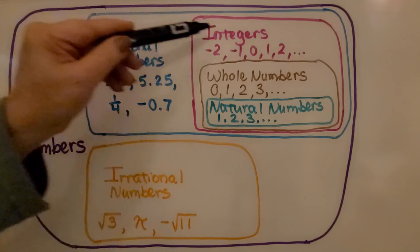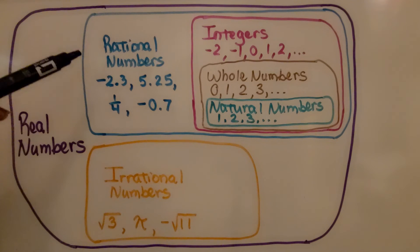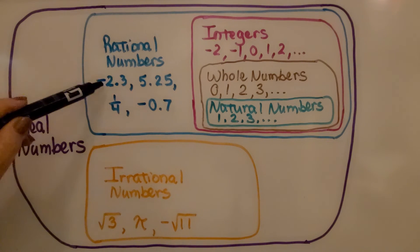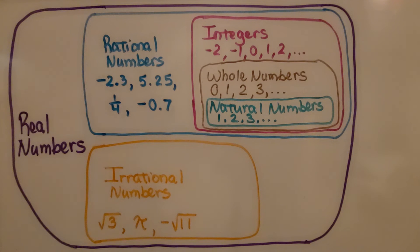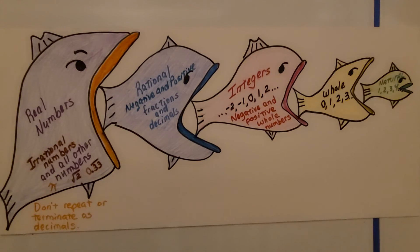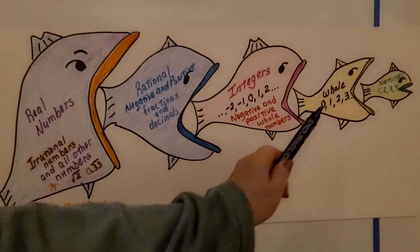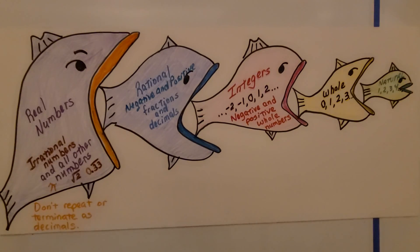For rational numbers, it includes all of these plus the negative and positive fractions and decimals. The irrational numbers cannot be written as a terminating decimal or a repeating decimal. And the rational numbers and irrational numbers are real numbers. These are all real numbers. Rational numbers, irrational numbers, and integers, whole numbers, and natural numbers are all subsets of real numbers.